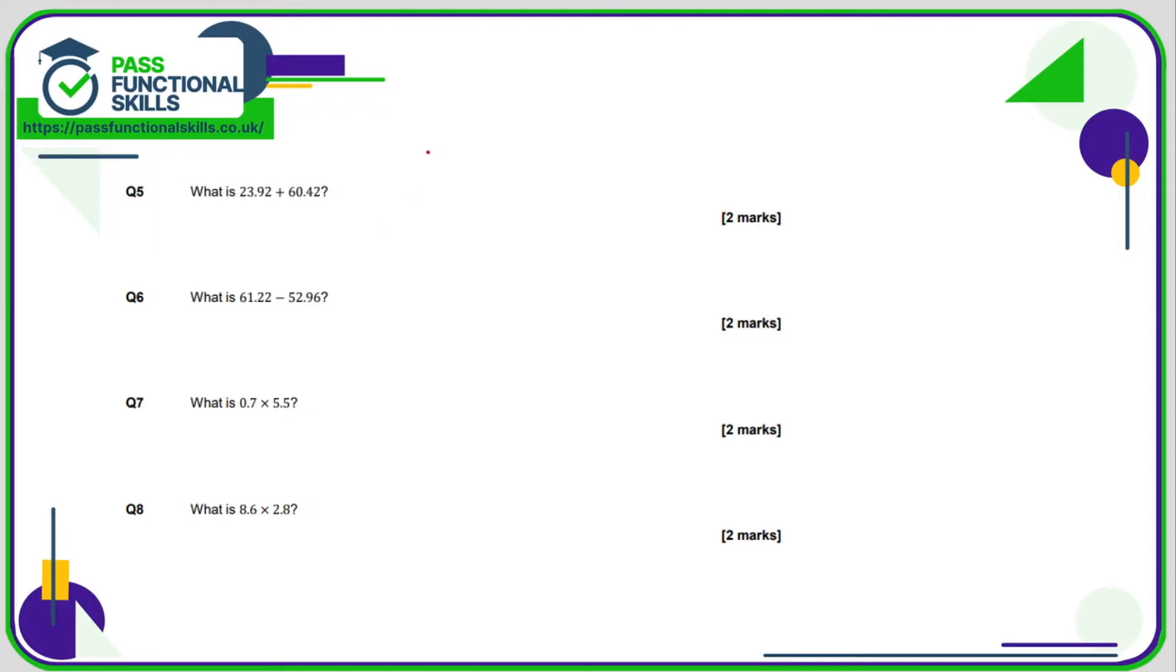Question number five, similar to question four, 23.92 plus 60.42. In the answer box, keep the decimal point in line. 2 plus 2 is 4. 9 plus 4 is 13, 3 carry the 1. 3 plus 1 is 4. 2 plus 6 is 8. So the answer is 84.34.